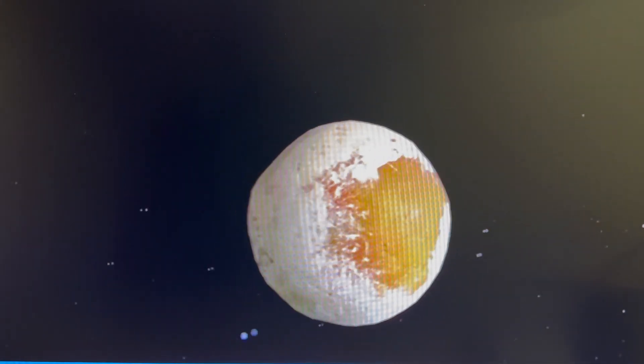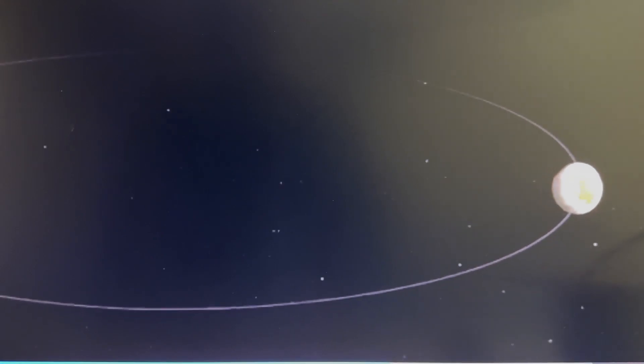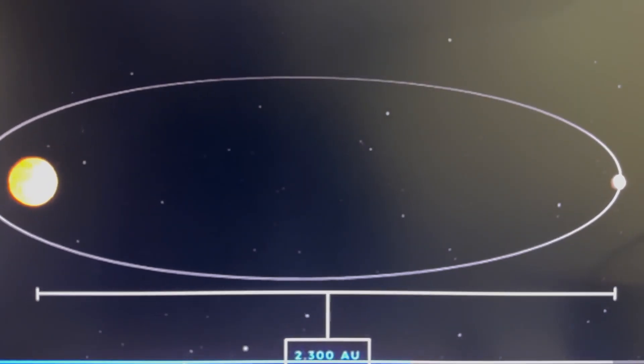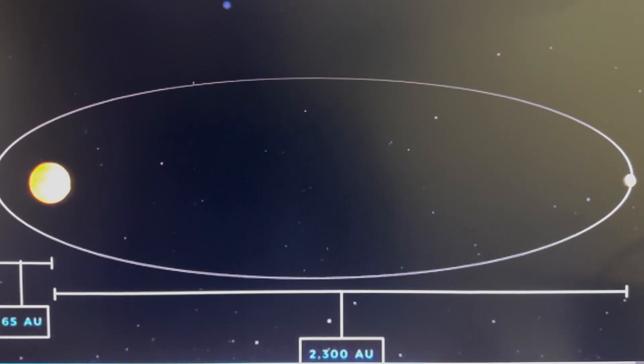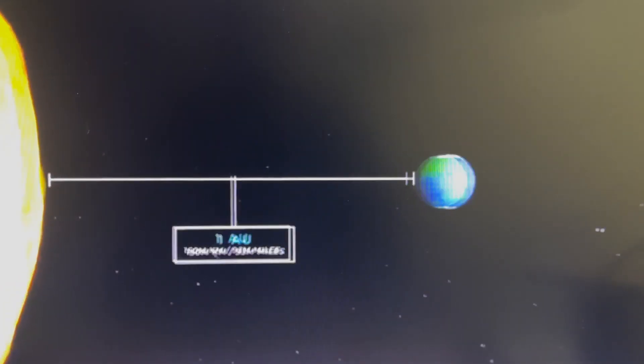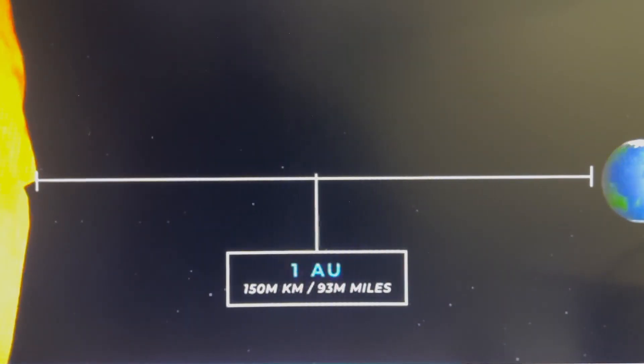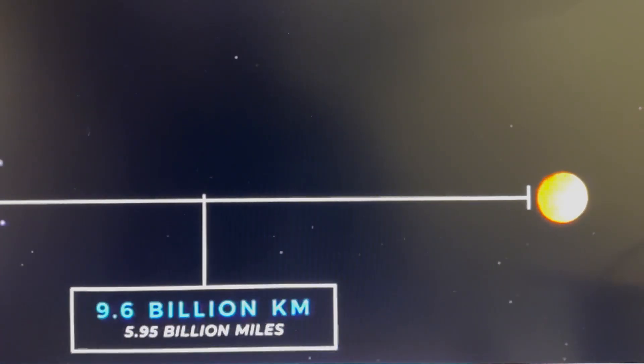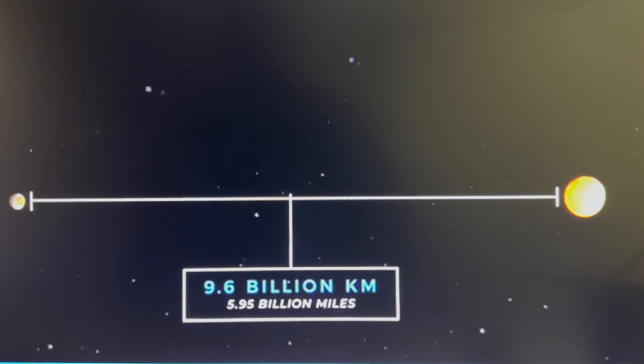The pint-sized planet, nicknamed the Goblin, travels about 2,300 astronomical units away from the Sun at its most distant point, and 65 AU at its closest. To put that into perspective, 1 AU is equal to the average Earth-Sun distance, which is about 150 million kilometers. So there are still 9.6 billion kilometers between the Goblin and the Sun at their closest point.